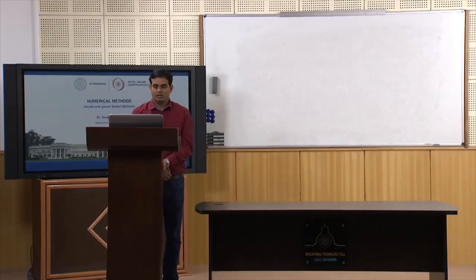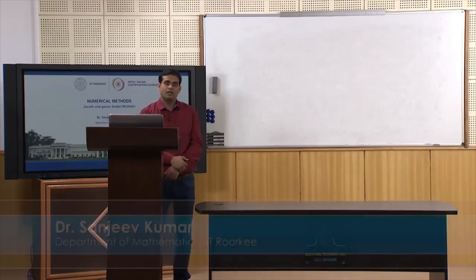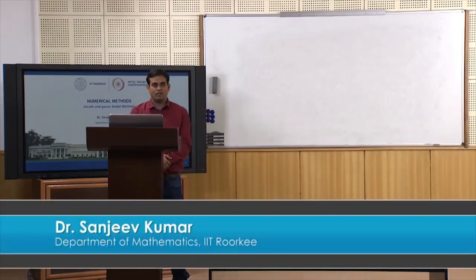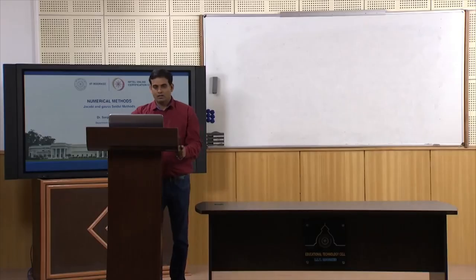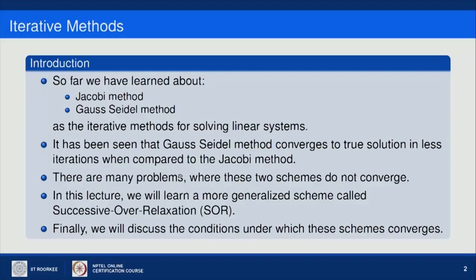Hello everyone. Today in this lecture we will continue from the previous lecture where I introduced two iterative schemes: the Jacobi method and the Gauss-Seidel method. It has been seen that the Gauss-Seidel method converges to the true solution in fewer iterations compared to the Jacobi method. However, there are many problems where these two schemes do not converge at all.